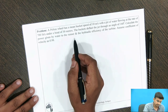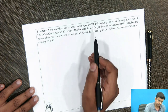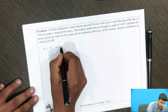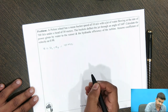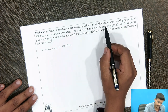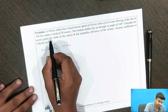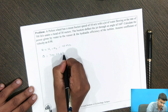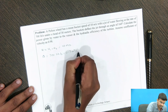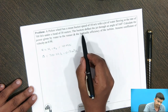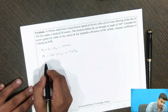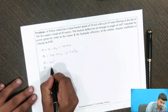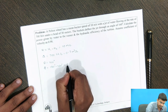First of all, we will write the given data here. The speed of the bucket is U = U1 = U2 = 10 meters per second. The discharge Q is given as 700 liters per second, which equals 0.7 cubic meters per second. They have also given that the bucket deflects the jet through an angle of 160 degrees, so theta = 160°. We calculate phi = 180° − 160° = 20°.